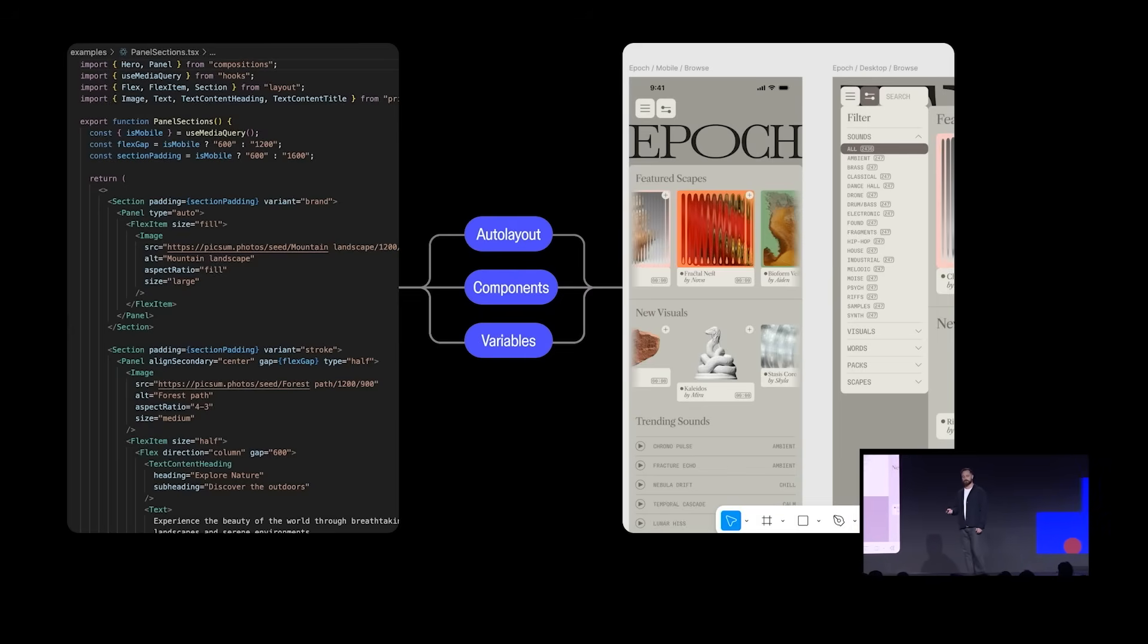As we build more tools to close the chasm, it's important that we further align our Figma concepts with our team's engineering components. This isn't new for Figma. Features like auto layout, components, and variables all originated in code. We brought them to Figma to make design more expressive, more flexible, and more aligned with how products are actually built. And it turns out using those leads to much better LLM generations across the board.